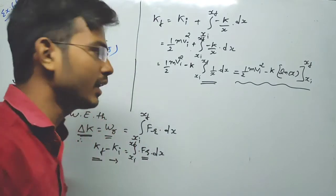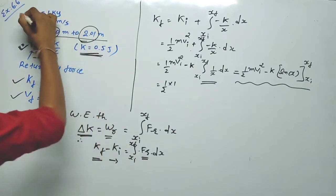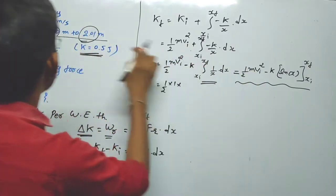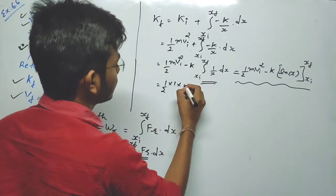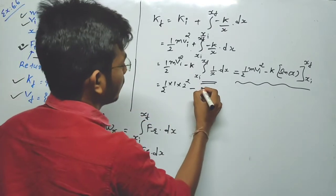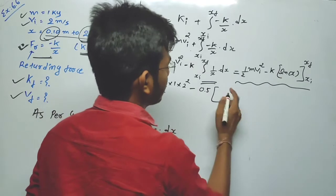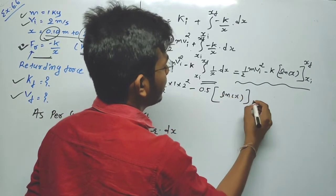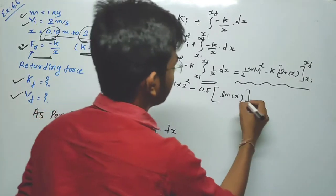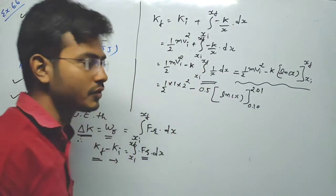So: K_f = (1/2)(1)(2²) - 0.5 × [ln x] from 0.10 to 2.01. That gives us (1/2)(1)(4) - 0.5 × [ln(2.01) - ln(0.10)]. The lower limit is x_i = 0.10 m and the upper limit is x_f = 2.01 m.